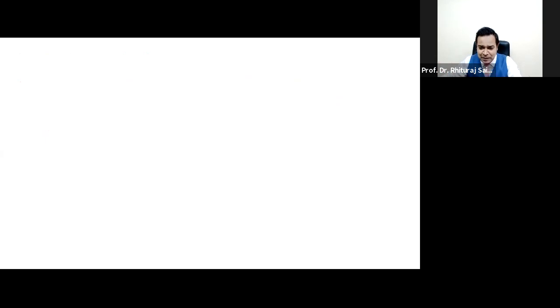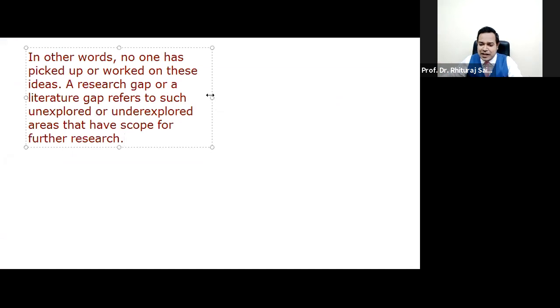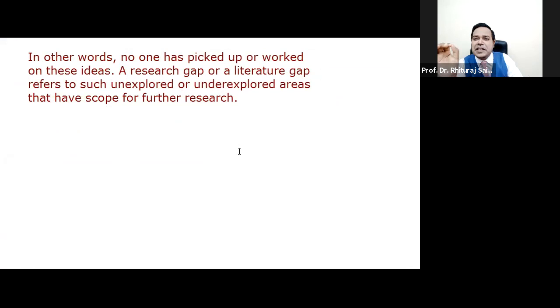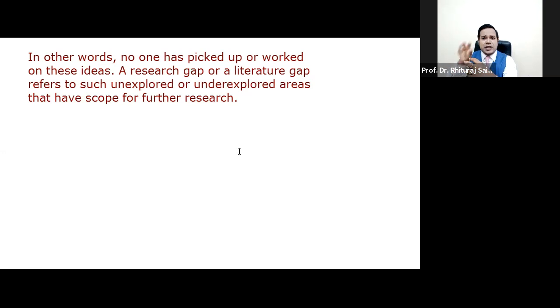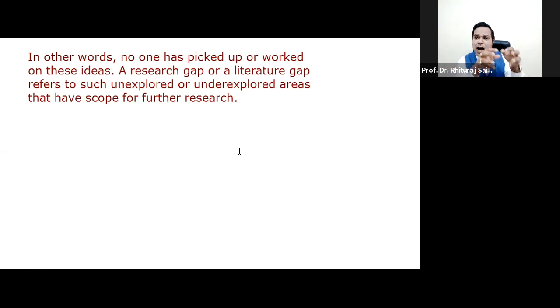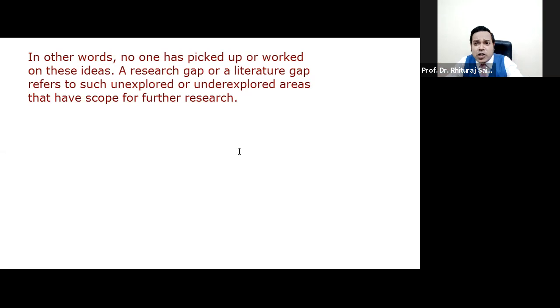Let me make it more simple. In other words, you can say that no one has picked up or worked on these ideas. Research gaps are areas which are underexplored or unexplored. You have to understand that point — someone has not done any work in that particular area, or someone is doing work but has made no publication, there is no evidence that they have done work in this area. So you can find out where the research gap is.